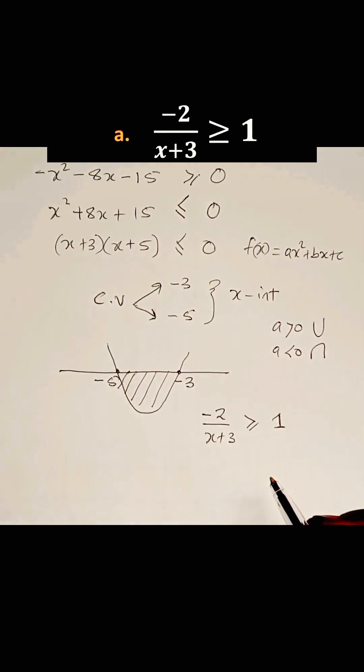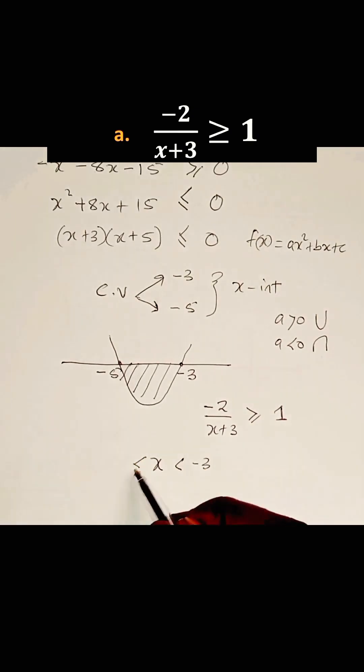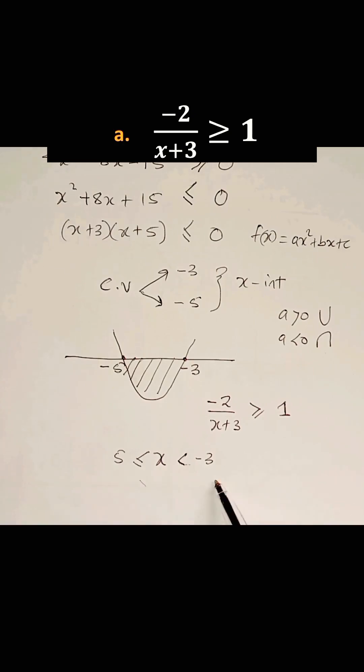Now we can write the solution as x lies between -5 and -3. I want you to take note that x doesn't have to be -3. So we don't put a less or equal sign on this because x doesn't have to be -3. If x is -3, this becomes undefined. Then this is the solution to that rational inequality.